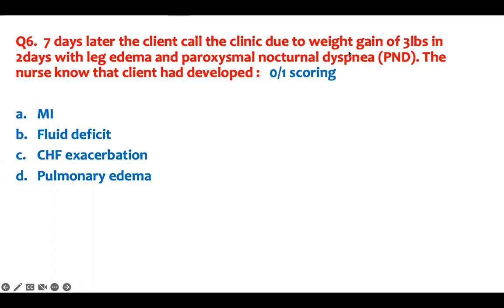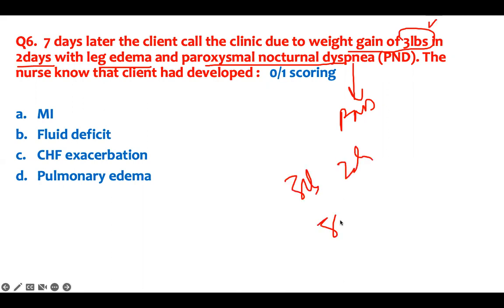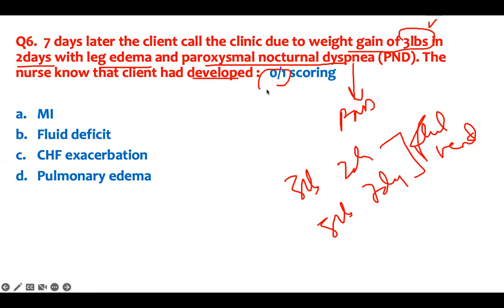Seven days later, the client called the clinic due to weight gain of three pounds in two days, leg edema, and paroxysmal nocturnal dyspnea. PND means the patient wakes up at night short of breath — a sign of heart failure and pulmonary edema. Weight gain of three pounds in two days or five pounds in seven days is a sign of fluid overloading. The nurse recognizes that the client has developed CHF exacerbation — not MI, fluid deficit, or isolated pulmonary edema.